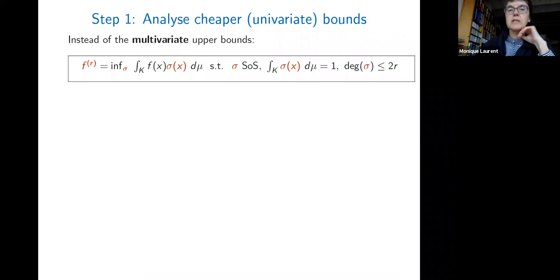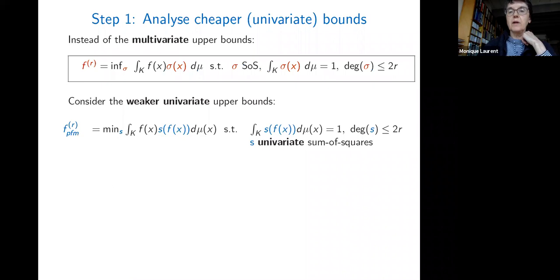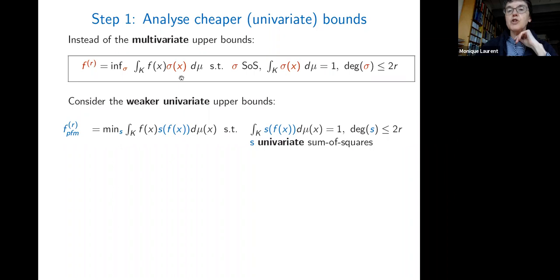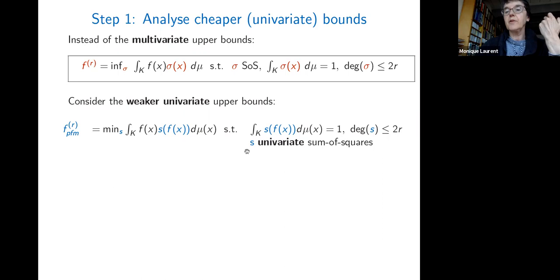For the first strategy: instead of searching for a multivariate SOS best form, let us be less greedy and search for a univariate sum of squares s, which we then use to define sigma as s(f(x)). This gives a multivariate SOS of a very special form, but potentially good enough for the desired error analysis.